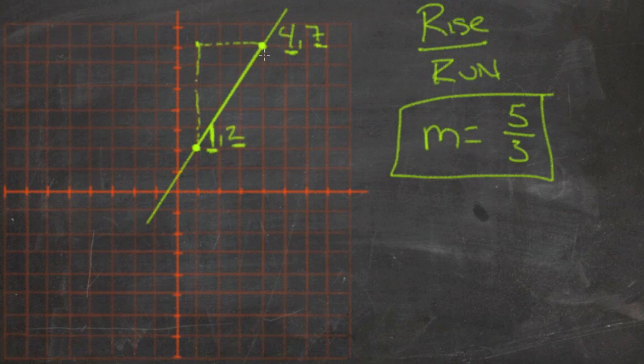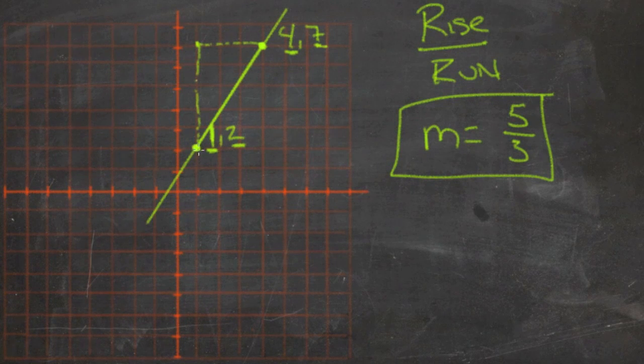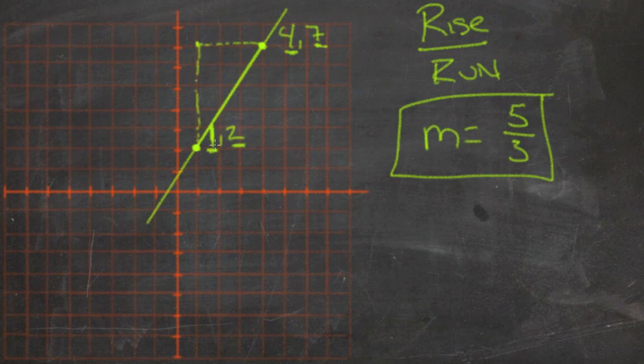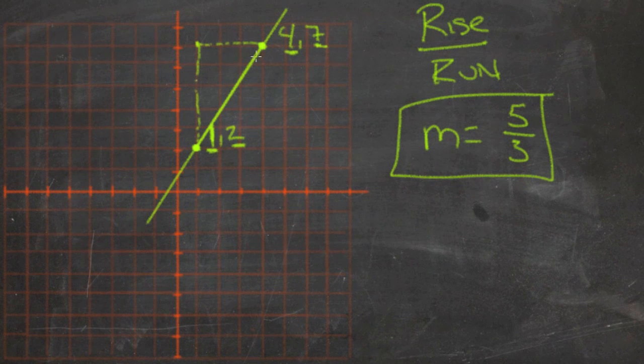Notice that you can actually go the other way. It doesn't really matter which point you start at as long as you use that point for your first coordinate for x and for y. But if we were to start at this point up here, then our rise would be a negative.